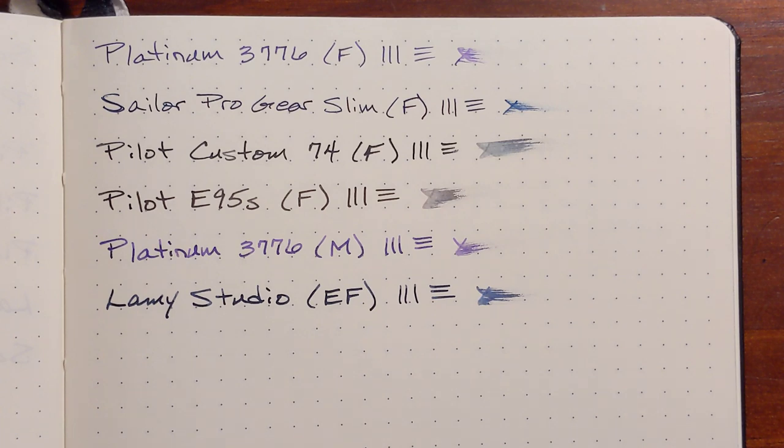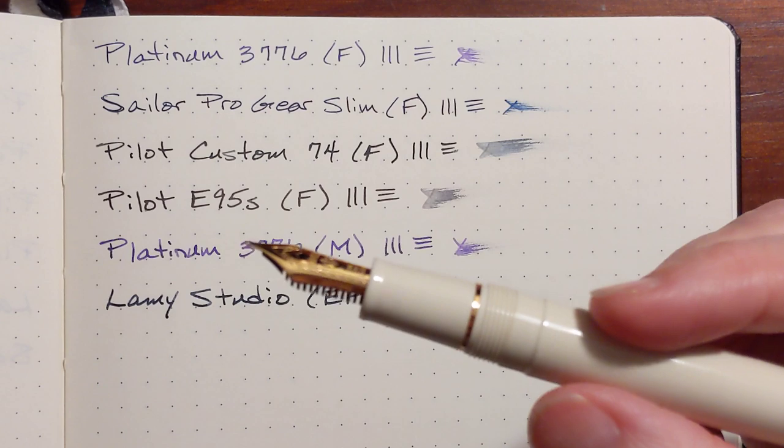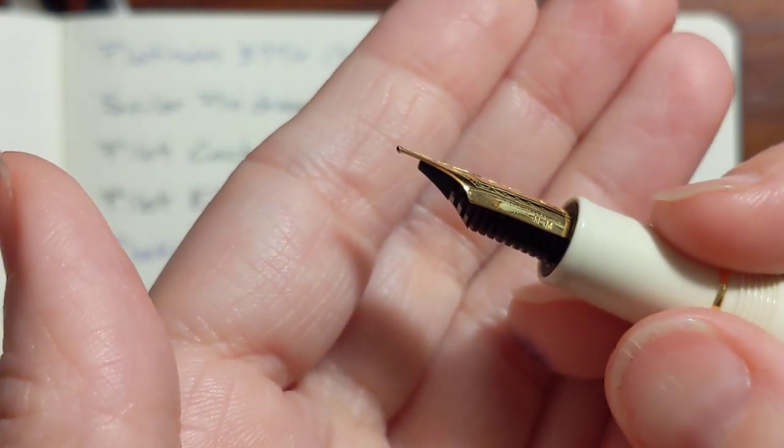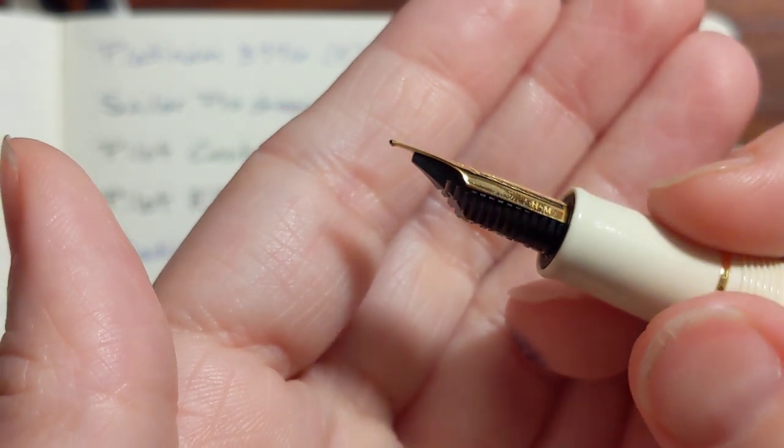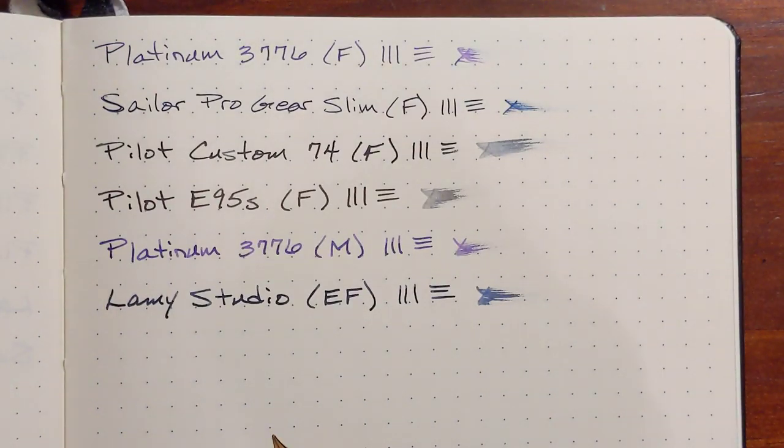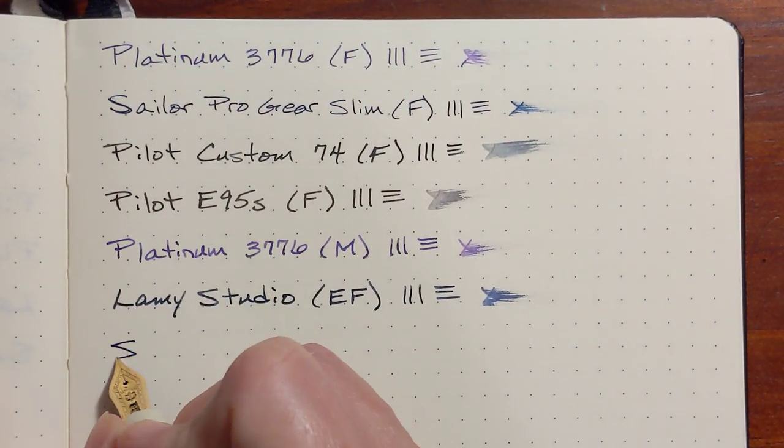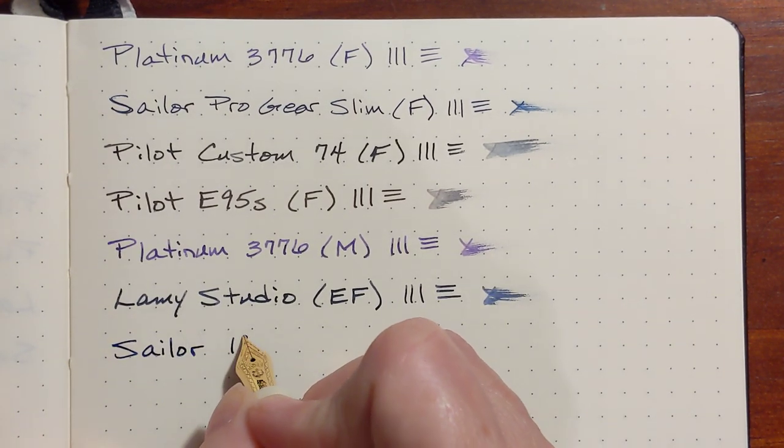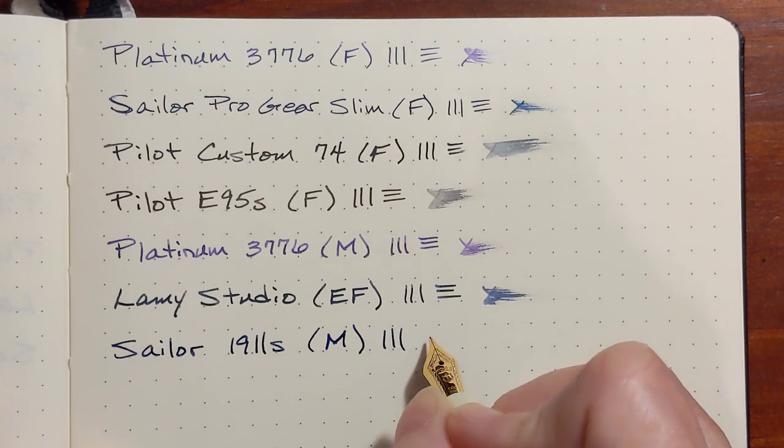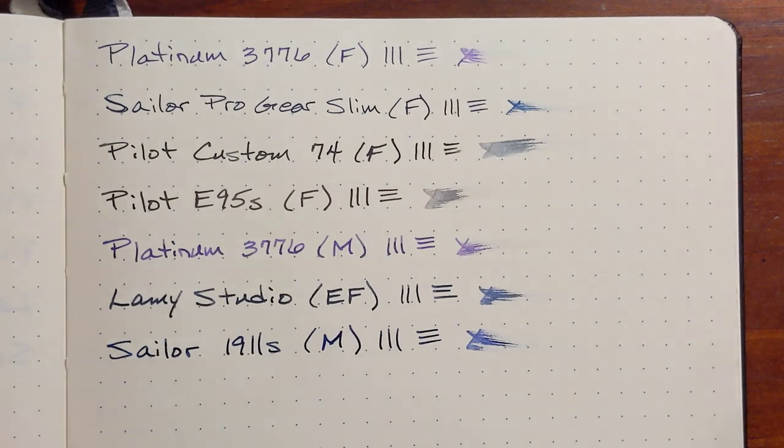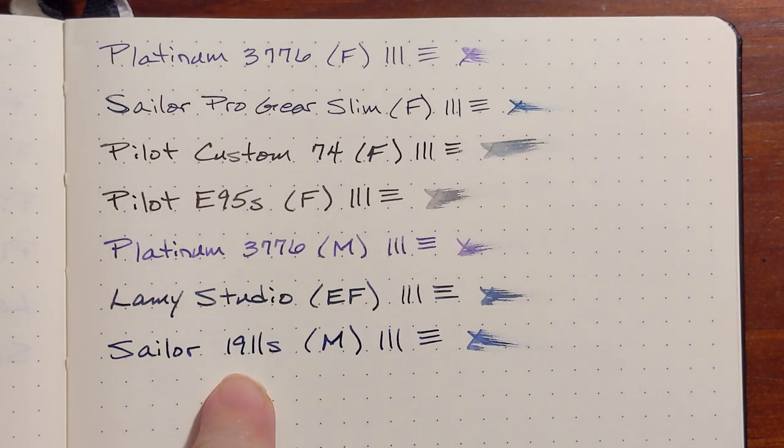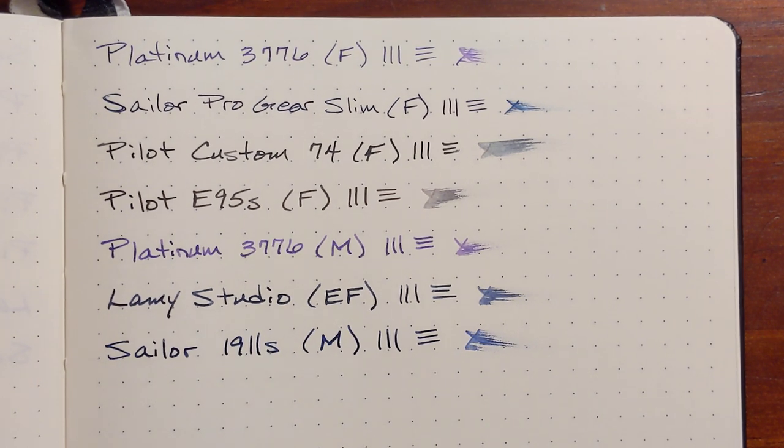And, finally, last on the list is the Sailor 1911 Medium. And the grind on the nib has a similar shape to the Lamy. It's kind of got that wedge shape, not as pronounced as the Lamy, but a slight wedge shape. This is the standard nib. It writes pretty wet compared to the fine Sailor nib, and I've got this one inked up with Diatra Mintus Sherlock Holmes.